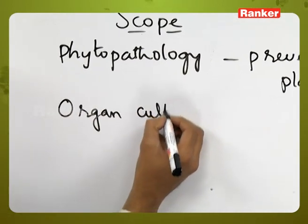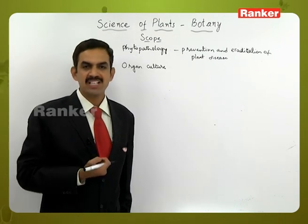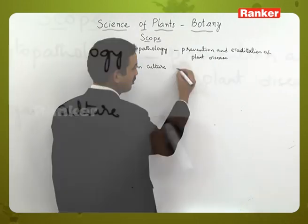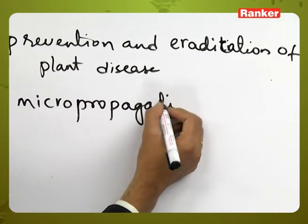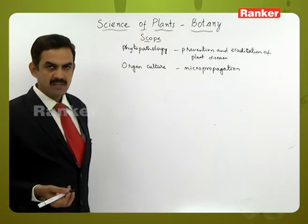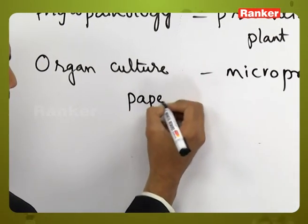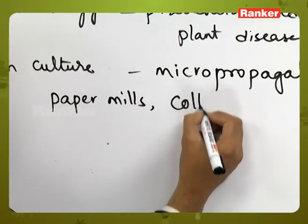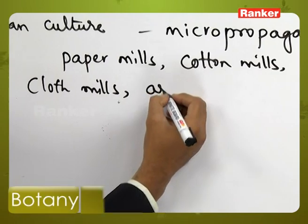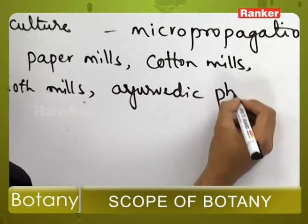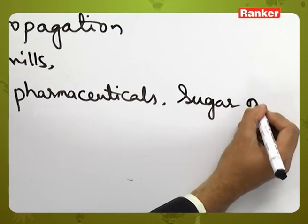Organ culture is a part of tissue culture where any part of the plant is taken and grown on a culture medium, leading to production of more plants in a short period. This concept is called micropropagation. It helps in conservation of endangered and rare plant species, and also supports development of paper mills, cotton mills, cloth mills, ayurvedic pharmaceuticals, and sugar mills.